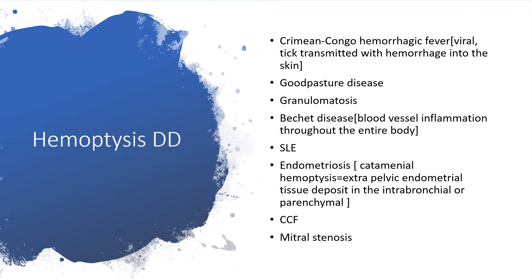And of course, due to autoimmune conditions like systemic lupus erythematosus. Endometriosis could also be responsible — and someone might be saying 'wow, how could that be?' That is what we call catamenial hemoptysis, when there is extra-pelvic endometrial tissue deposition in intrabronchial or parenchymal regions of the lungs. So a woman might think endometriosis is restricted to the reproductive region, but indeed it can be found when endometrial tissue is deposited in the lungs.